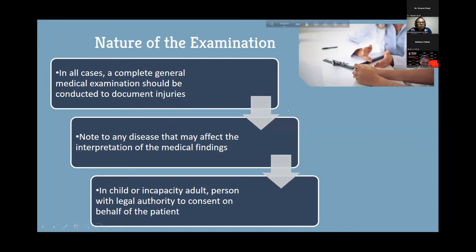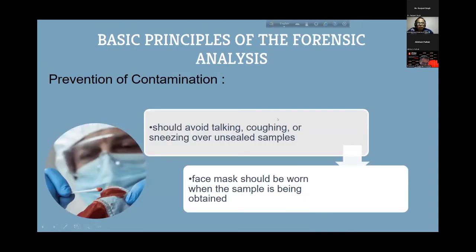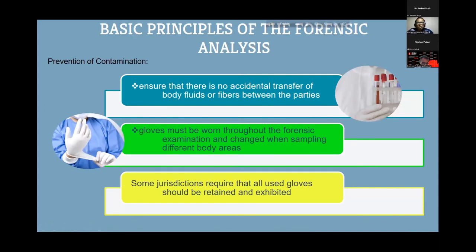In all cases, a complete general medical examination should be conducted to document injuries and note all diseases that may affect interpretation of medical findings. In a child or incapacitated adult, a person with legal authority must consent on behalf of the patient. Gloves should be worn throughout the forensic examination and changed when sampling different areas — for example, changing gloves between axilla samples — and used gloves should be retained as exhibits.